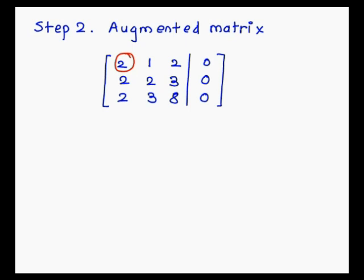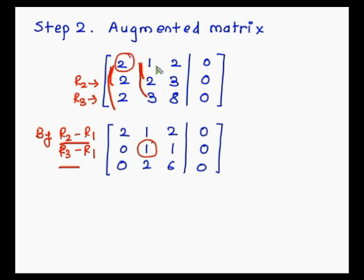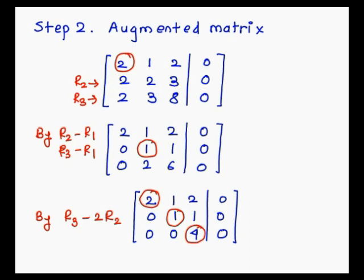Using the leading entry, we make the below row entries 0 by applying row operations R2 - R1 and R3 - R1. The result is: R2 becomes (0, 1, 1 | 0) — since 2-2=0, 2-1=1, 3-2=1 — and R3 becomes (0, 2, 6 | 0) — since 2-2=0, 3-1=2, 8-2=6. Now the leading entry for the second row or second column is 1. To make the entry below it 0, we apply R3 - 2R2, giving new R3 = (0, 0, 4 | 0).